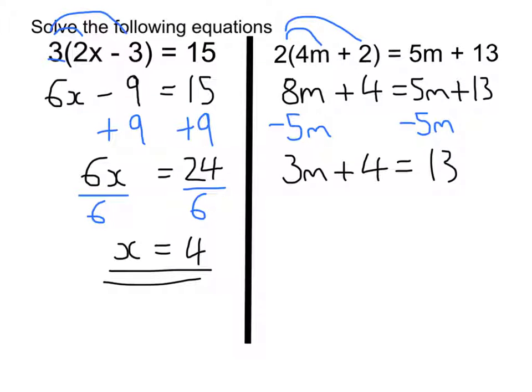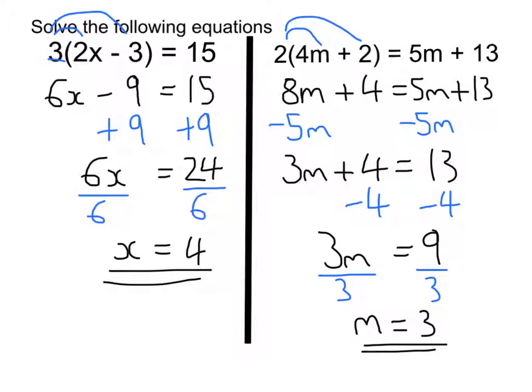Now I'm going to take away 4 from both sides so that I get all the numbers on the right-hand side. So we're going to get 3m is equal to, the 4s cancel, 13 take away 4 is 9. And now I have letters on one side, numbers on the other. I just divide by the number in front of the letter. This time it's 3. So 3m divided by 3 is m, and 9 divided by 3 is 3. So my answer is m is equal to 3.